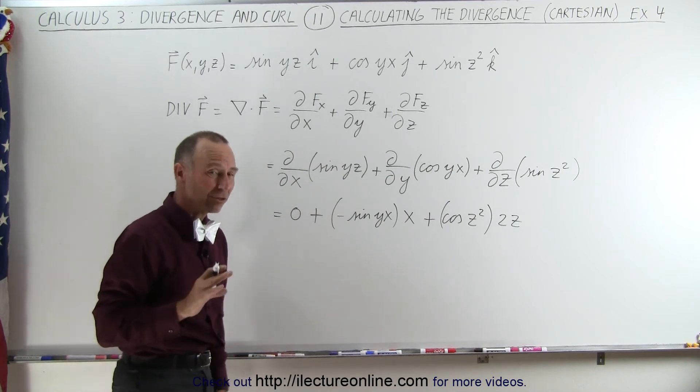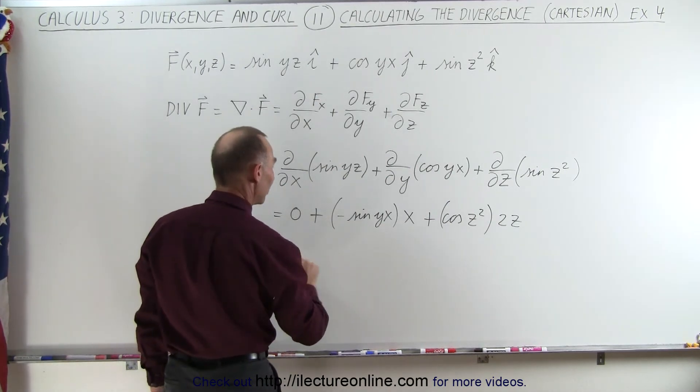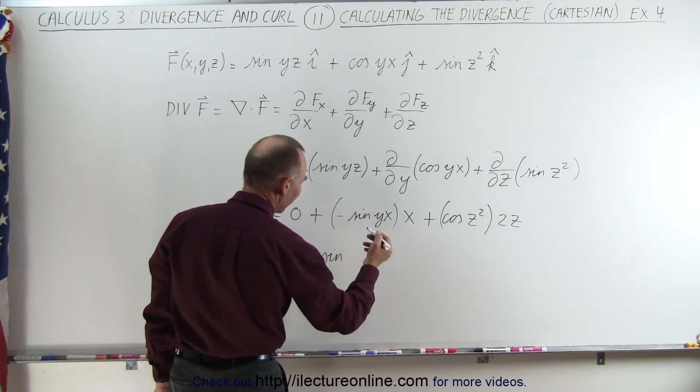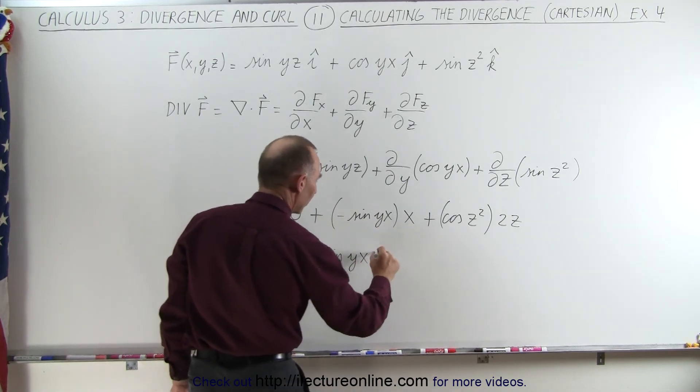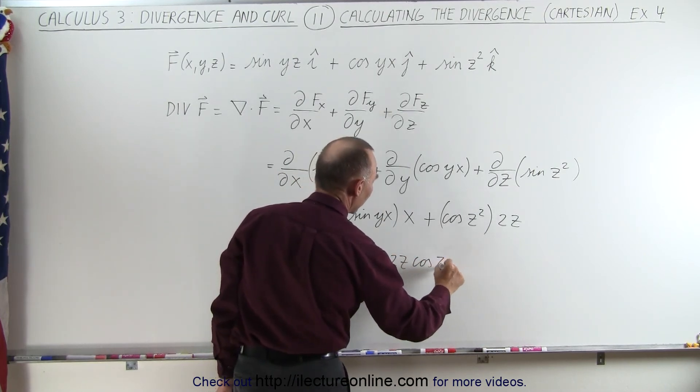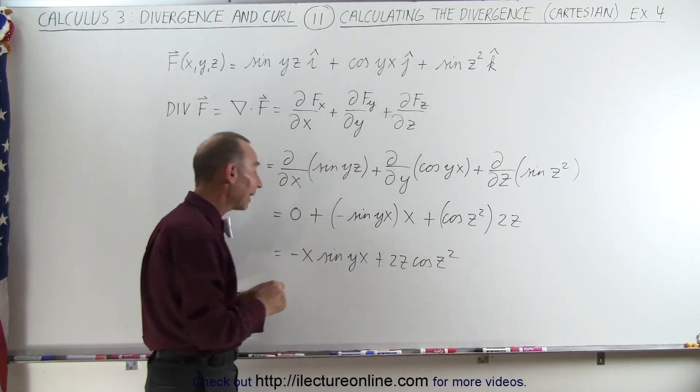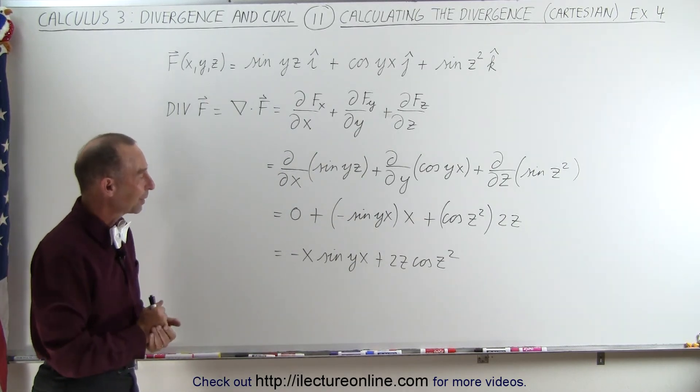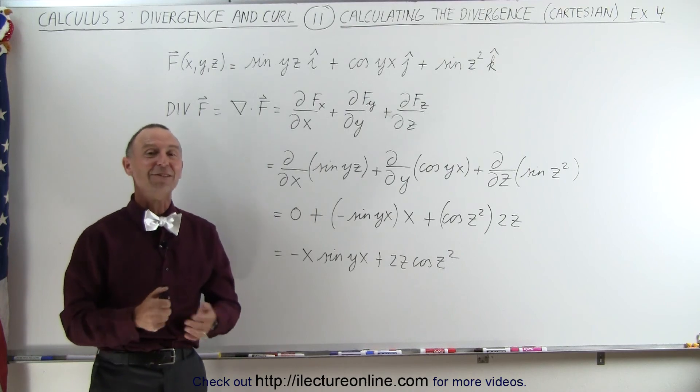And simplifying that just a little bit, this becomes equal to minus x sine yx plus 2z cosine of z squared, and that then becomes the divergence of this particular vector field. And that's how it's done.